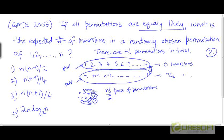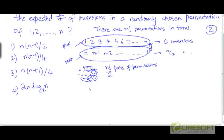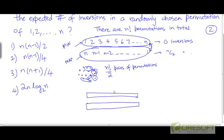The reason for dividing these n factorial permutations into pairs is that we can generalize the pattern to any arbitrary pair. So let's consider a permutation which has k inversions, and let's consider its reverse — the other permutation in the pair. Now if we look at two elements in the original permutation with indices i and j and values a[i] and a[j], there are only two possible cases: either the pair (i, j) is an inversion, or it is not an inversion.